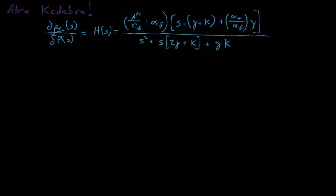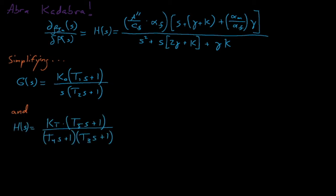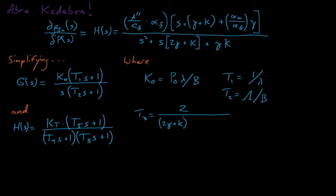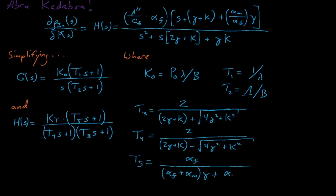These equations tend to lead us into an algebraic death spiral, so we'll define several constants to simplify our expressions for h(s) and g(s) — the reactivity forward transfer function. These constants include t1, t2, t3, t4, t5, and also k-naught and k_t.